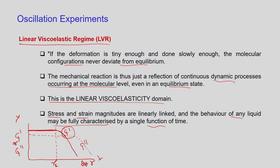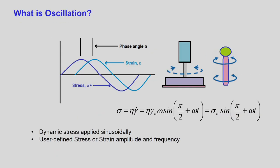Let me revise what G prime and G double prime mean. In oscillation, you have stress and strain both in sinusoidal form. The difference between them is called the phase angle. The phase angle relates to frequency: sigma equals viscosity times strain rate, where strain rate involves omega the angular frequency. We apply dynamic stress sinusoidally — either define stress and measure strain, or define strain and measure stress.